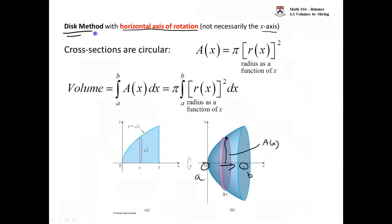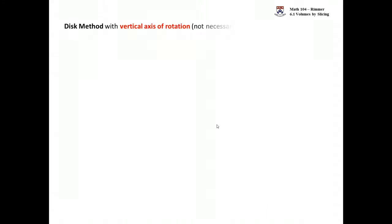That's how we're going to get the volume with disk method, when the axis is horizontal. Here's the axis here. I'm rotating about the x-axis. Horizontal axis of rotation. Then your disk method will be in terms of x. But if you flip to have a vertical axis of rotation...